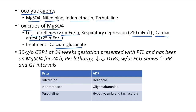Clinical case of magnesium sulfate toxicity: 30-year-old G2P1 at 34 weeks with preterm labor on magnesium sulfate for 24 hours. Examination shows lethargy and reduced deep tendon reflexes. ECG shows prolonged PR and QT intervals — classical case of magnesium sulfate toxicity. Toxicities of other tocolytics: nifedipine causes headache; indomethacin causes oligohydramnios; terbutaline causes hypoglycemia and tachycardia.